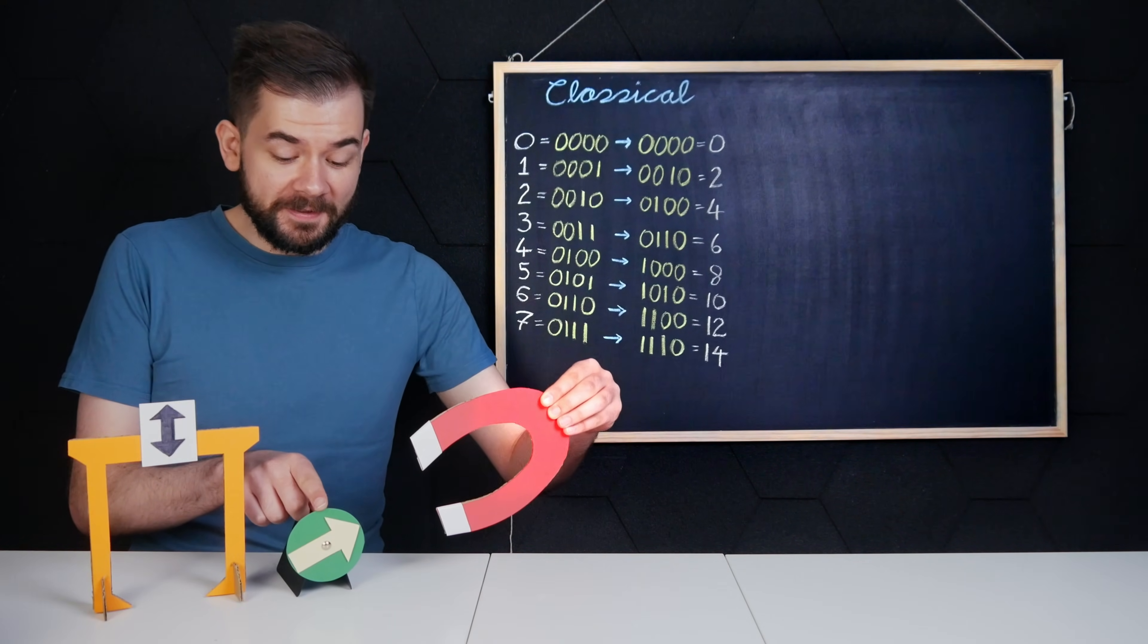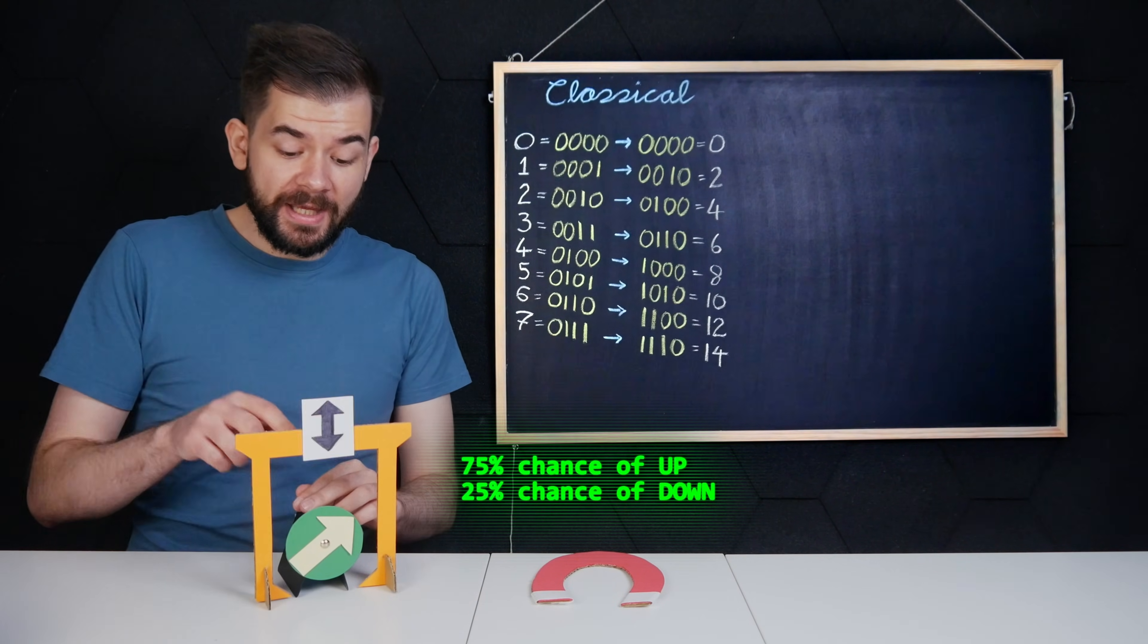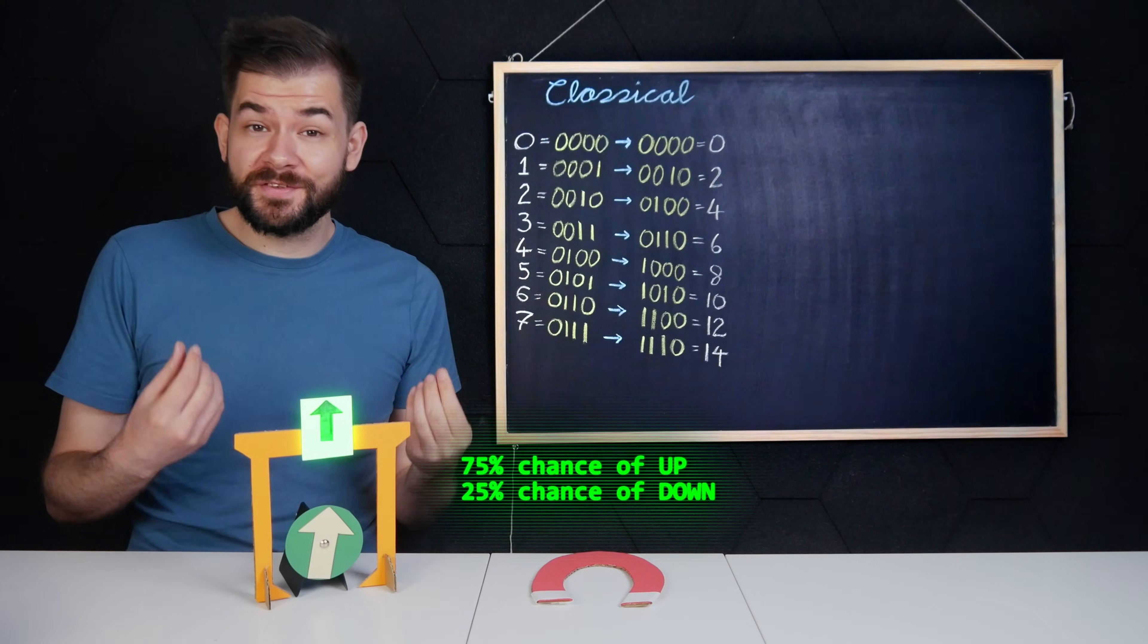Now, I can apply a different magnetic field to make it more likely to be spin-up, but sometimes it won't be. The process is still probabilistic.